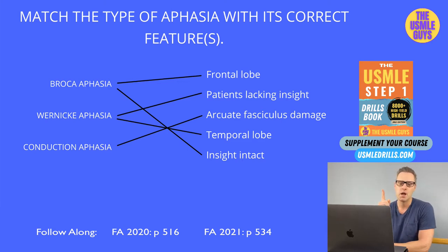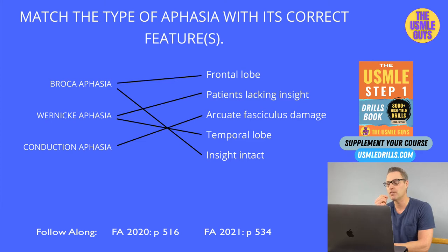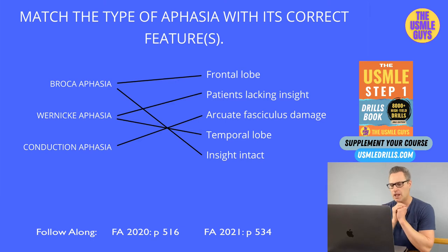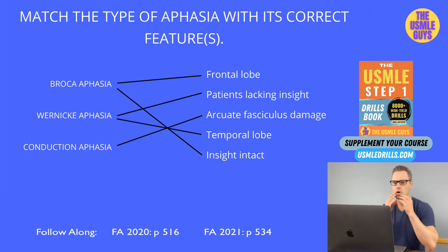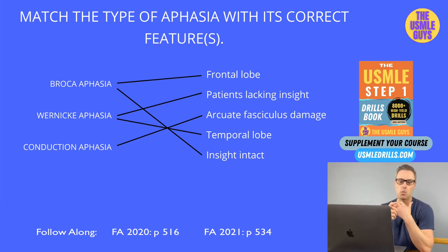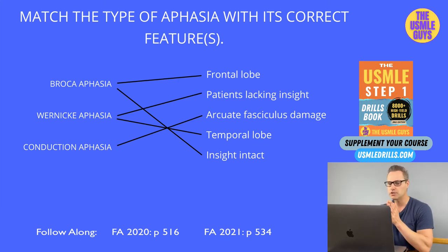There are a couple different types of aphasia: Broca's and Wernicke's. Broca's aphasia is an expressive aphasia characterized by the inability to produce language. The Broca area is in the frontal lobe, in the inferior frontal gyrus. Wernicke's aphasia is a receptive aphasia, characterized by an impairment in the ability to understand. So one is expressive, one is receptive.